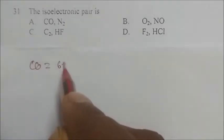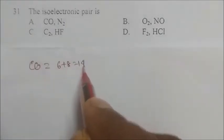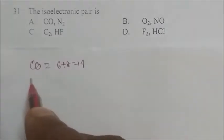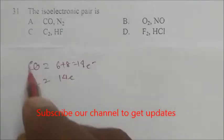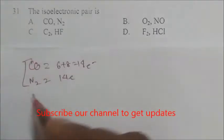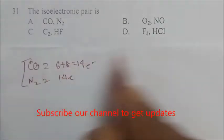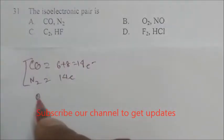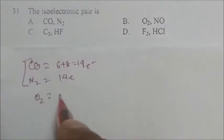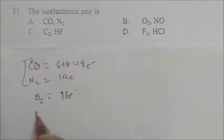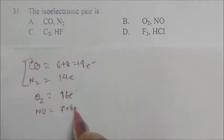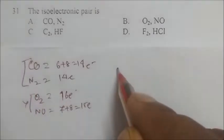For carbon monoxide, the electron count is 6 plus 8, which is 14 electrons. Similarly for N2, it is also 14 electrons, so CO and N2 are isoelectronic. For O2, the count is 8 plus 8 = 16 electrons, and for nitric oxide (NO) it is 7 plus 8 = 15 electrons, so these are not isoelectronic.